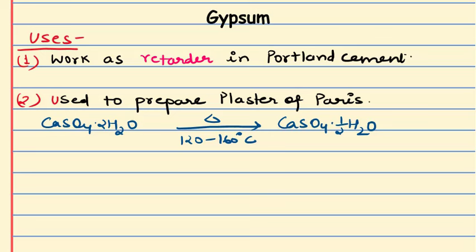Besides these main uses, gypsum has many other uses. It is used as a fluxing agent, soil conditioner, and filler in paper and textiles. It is used in plaster board products, tiles, blocks, and in the manufacture of cement. It is also used in the manufacture of fertilizers.